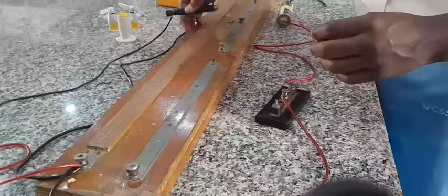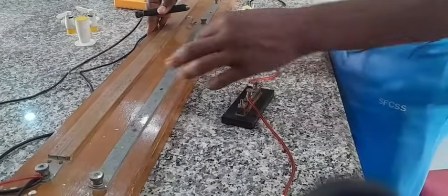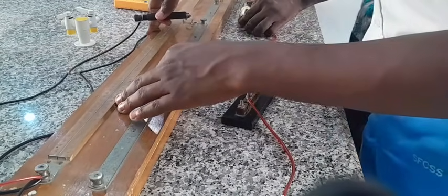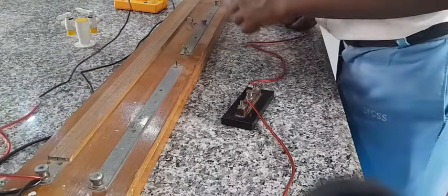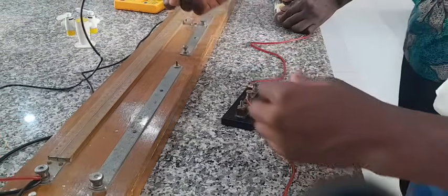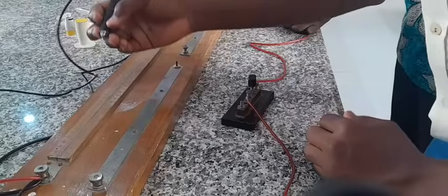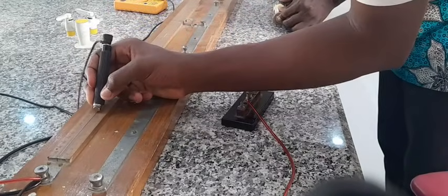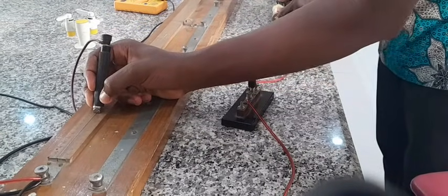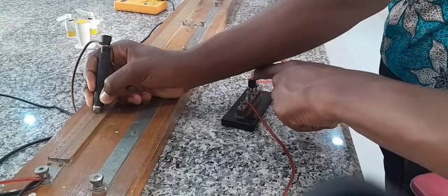So we're going to take our measurements when the jockey is in contact with the potentiometer at 10, 20, 30, 40, 50, and 60 centimeters. You start with 10 centimeters. Ensure you don't slide your jockey over the potentiometer, you place it. Then we close the key.